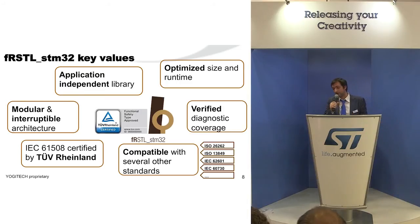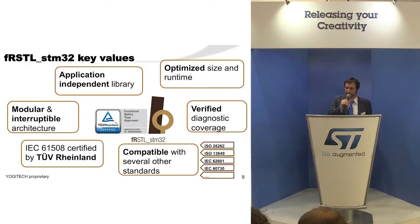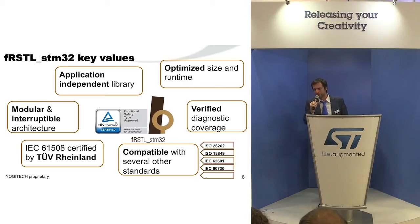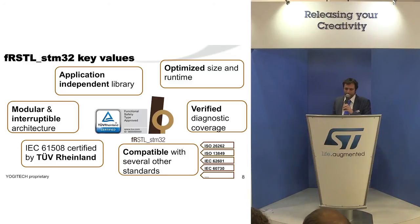These libraries are certified by TÜV Rheinland and are absolutely application-independent. We have almost no visibility of how our customers use them — they appear in projects ranging from robotic arms to heavy machinery to medical equipment. The library is optimized in size and runtime; just to give a number, the F0 library is about 10 kilobytes of binary code, which is quite small. There is quantitative evidence of the coverage provided by the library, verified by fault injection.